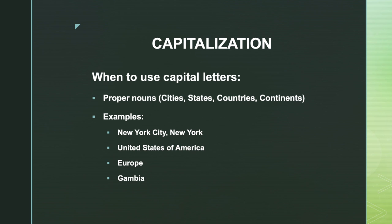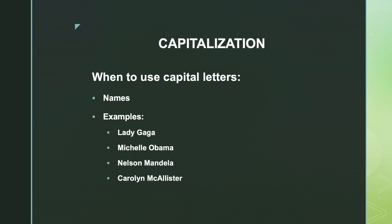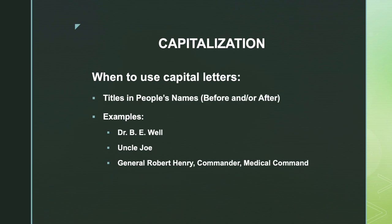You use capital letters for proper nouns, which include cities, states, countries, and continents. For example, New York City and New York are a city and state that must be capitalized. The United States of America is a country. Europe is a continent. And Gambia is a country in Africa. Of course, people's names are capitalized — examples include Lady Gaga, Michelle Obama, Nelson Mandela, and my name, Carolyn McAllister.